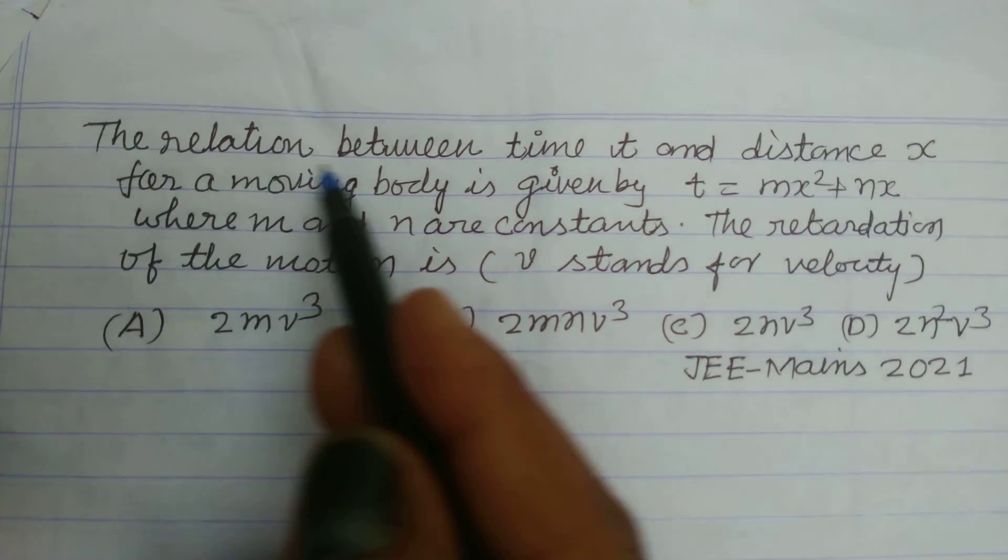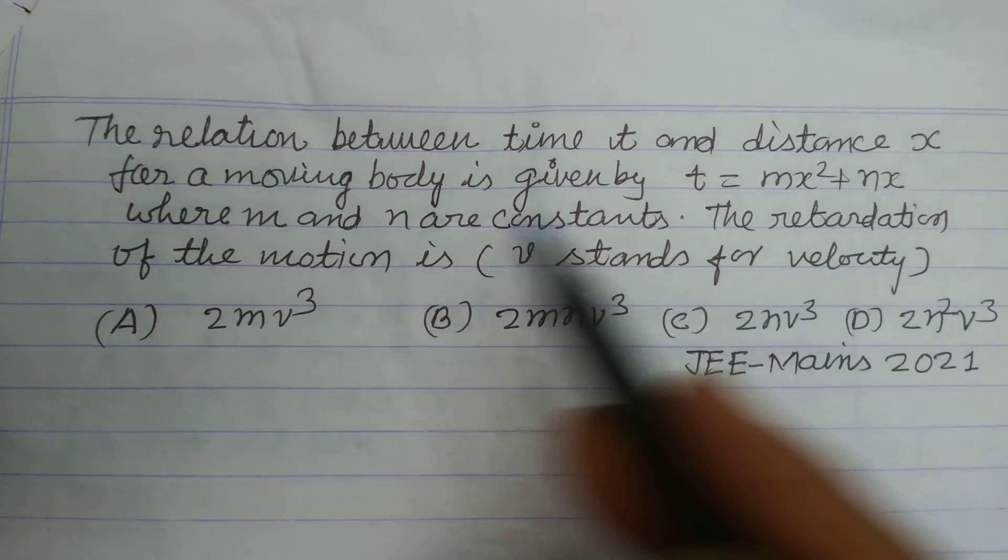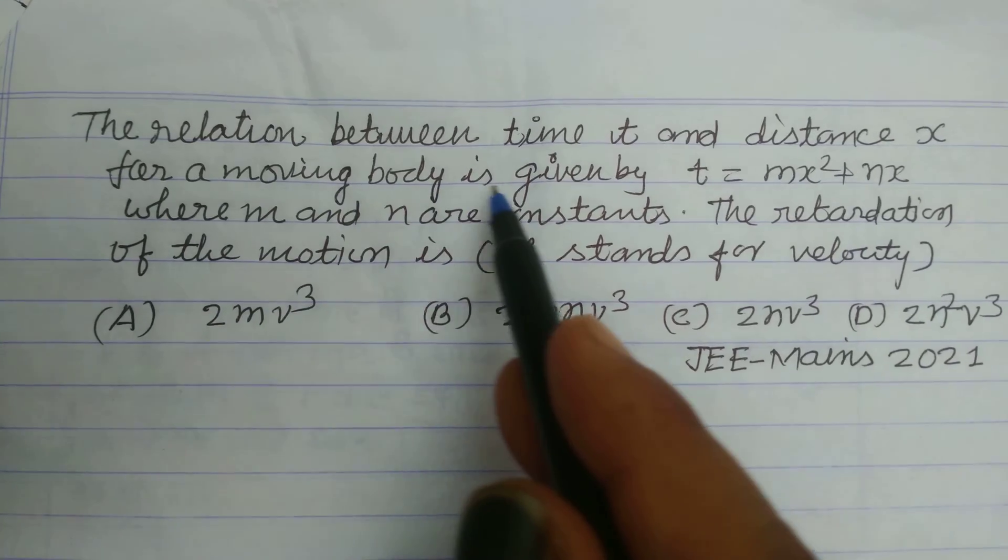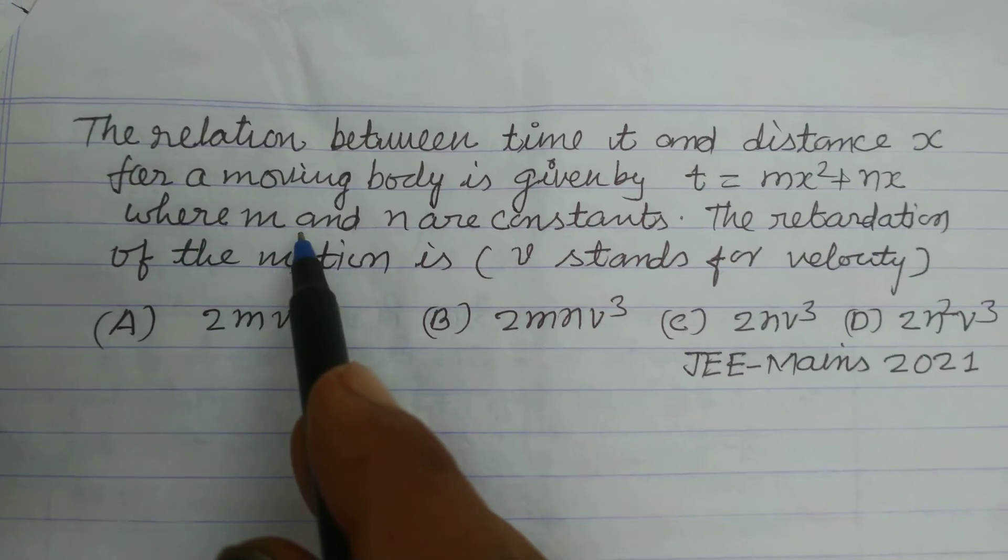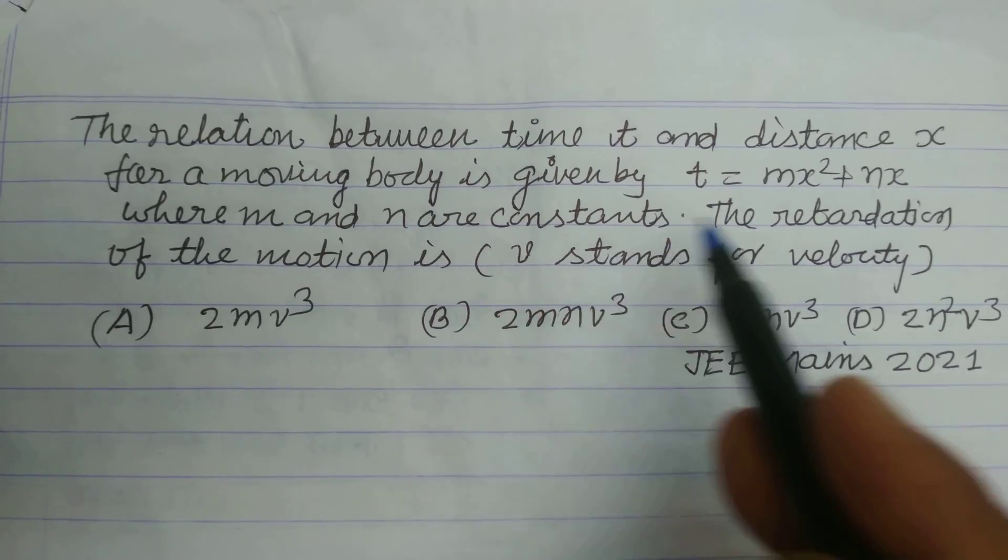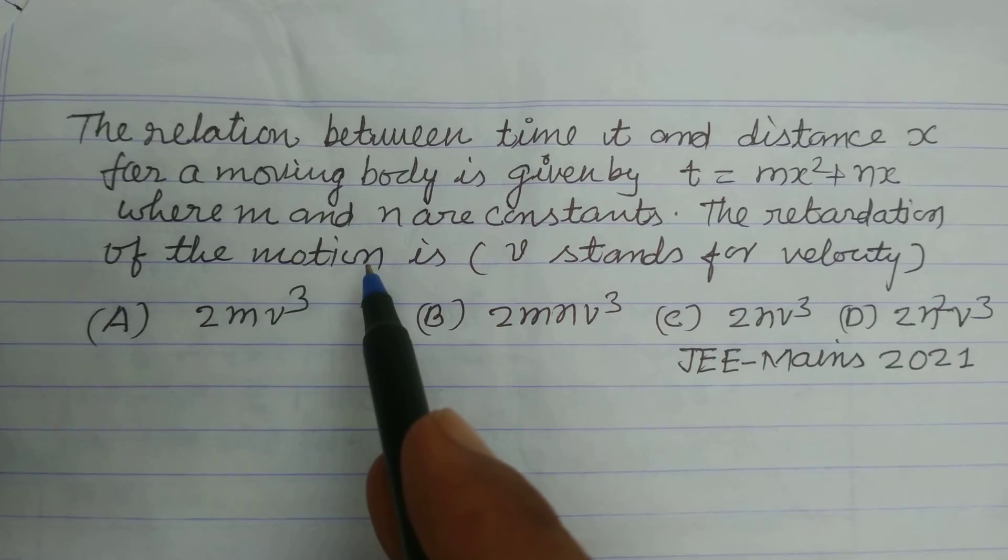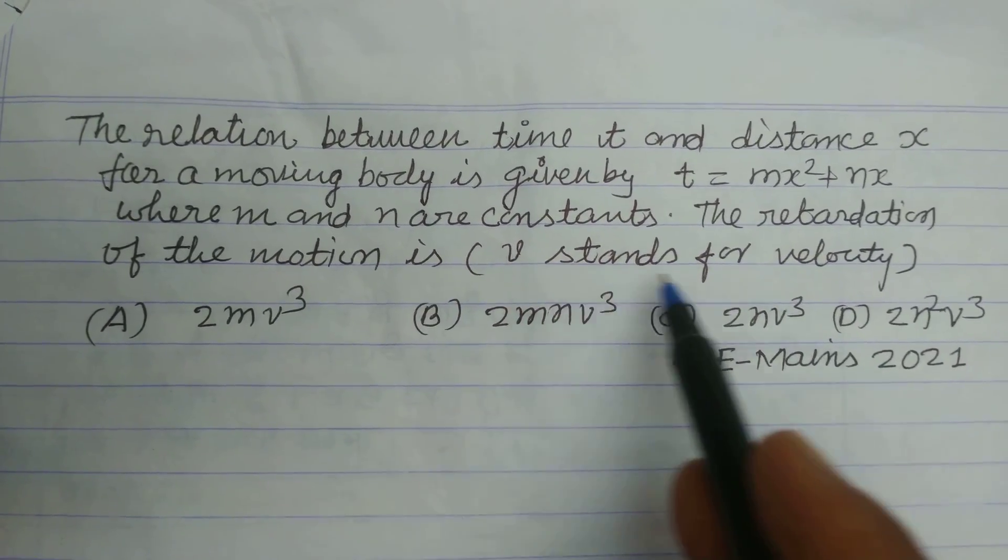Hello students. The relation between time t and distance x for a moving body is given by t = mx² + nx, where m and n are constants. Find the retardation of the motion, where v stands for velocity.